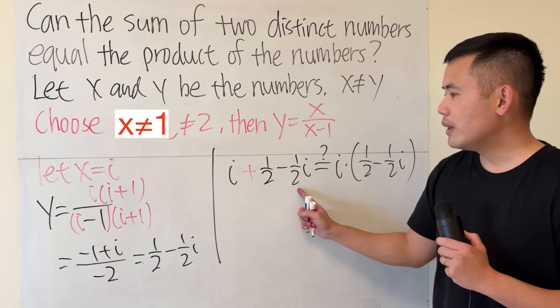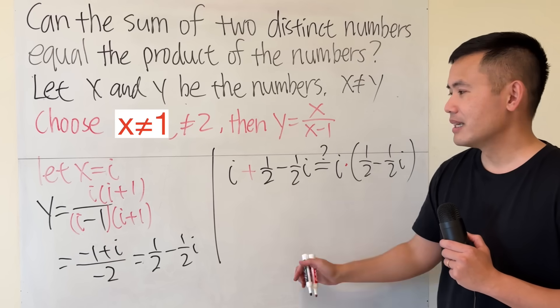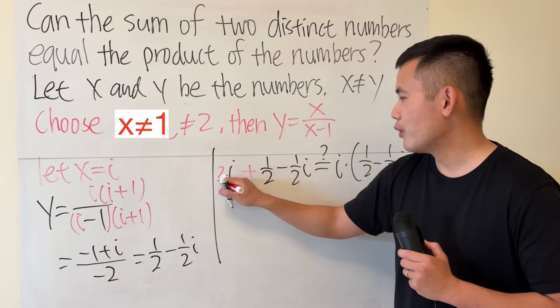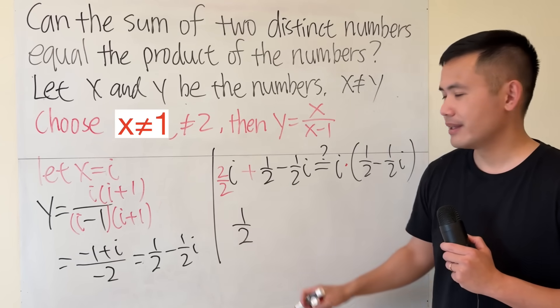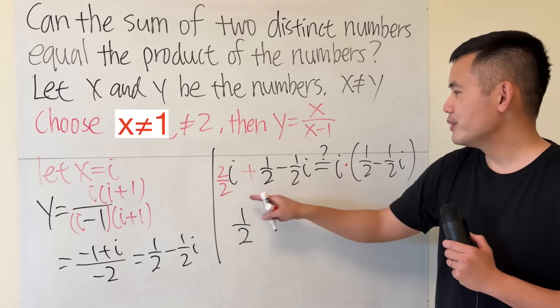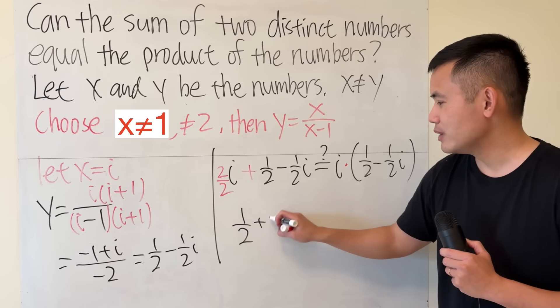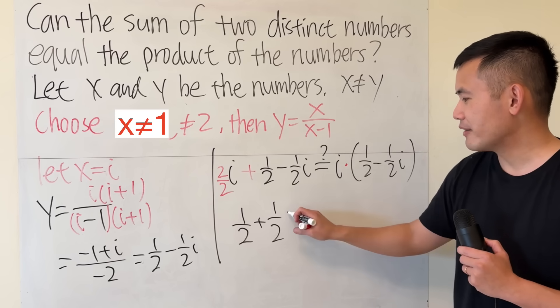For this one, we just have to combine this and that. This is the same as saying 2 over 2i. So we have the 1 half from here. And then 2 over 2 minus 1 over 2 is positive 1 over 2. And then both of them have the i.